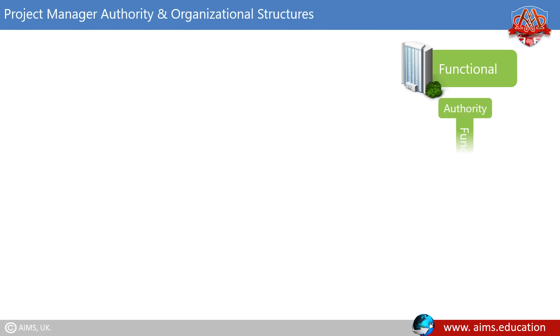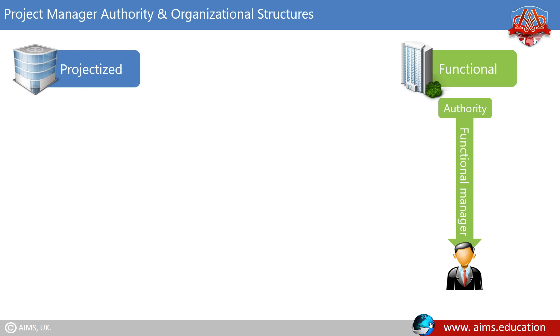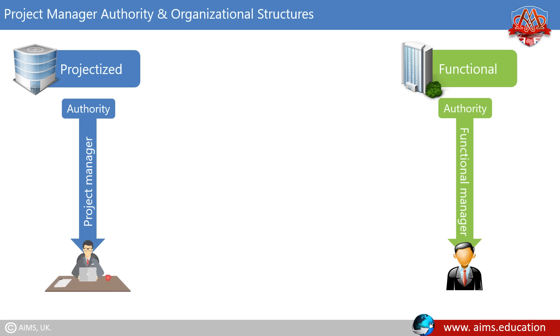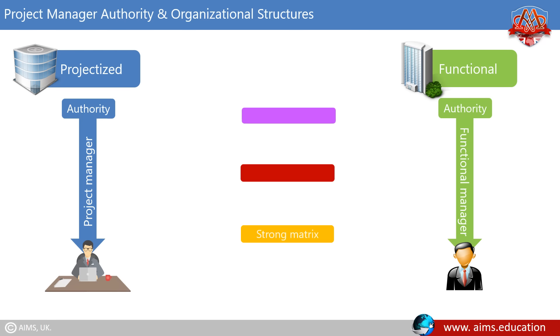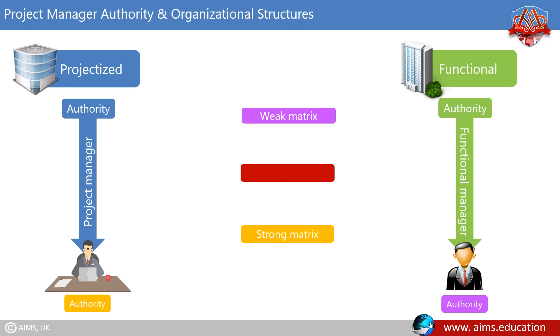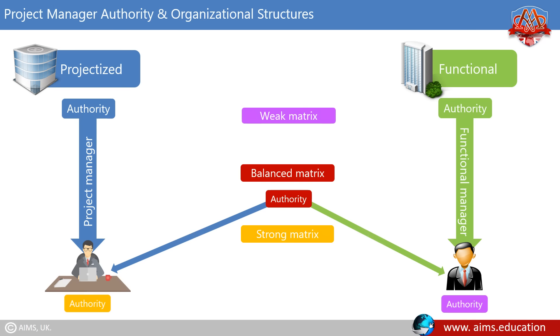In a functional organization, project authority rests with a functional manager, and in a projectized organization, it rests with a project manager. A matrix organization tries to be somewhere in between these two. In a strong matrix, the authority is with the project manager, just like in a projectized organization. In a weak matrix, the authority is with the functional manager, just like in a functional organization. In a balanced matrix, the authority over the project is shared by both the functional manager and the project manager.